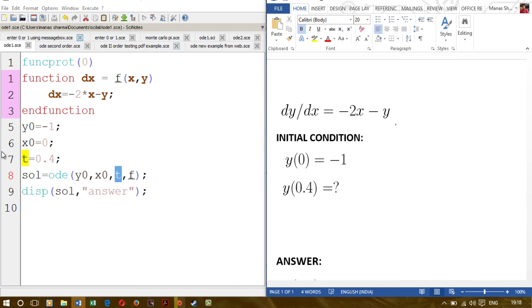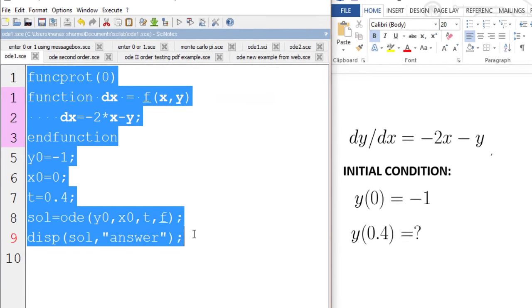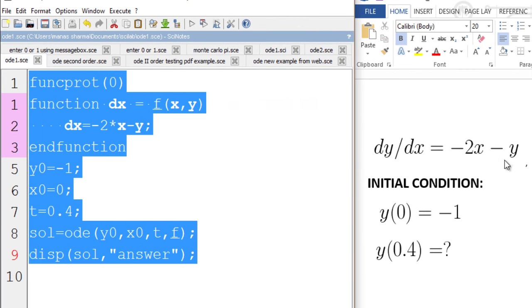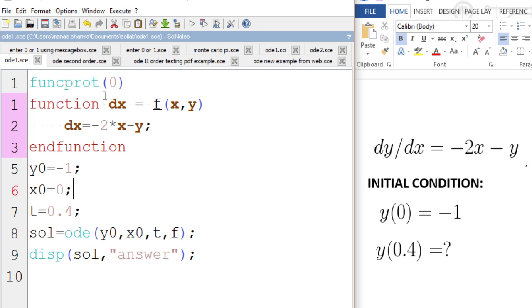Now let's switch over to Scilab. Here I have already typed in the commands for solving this particular differential equation when x equals 0.4. Let's go step by step to find out how it is done.